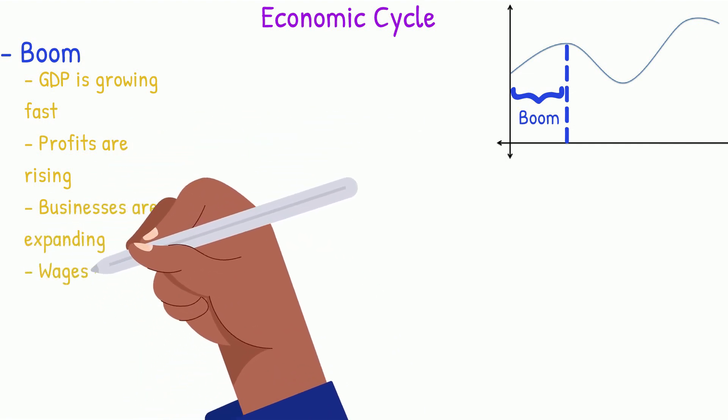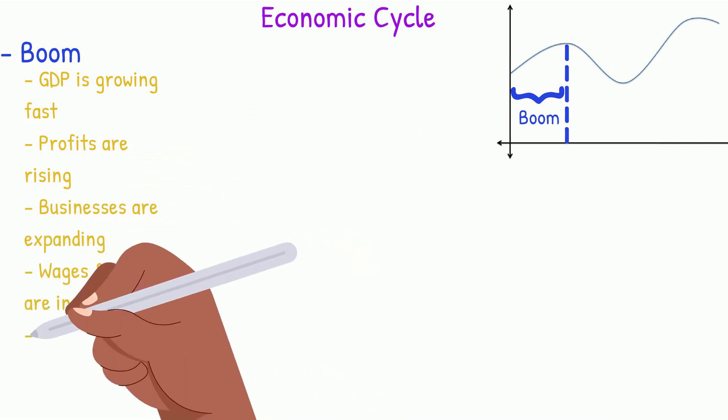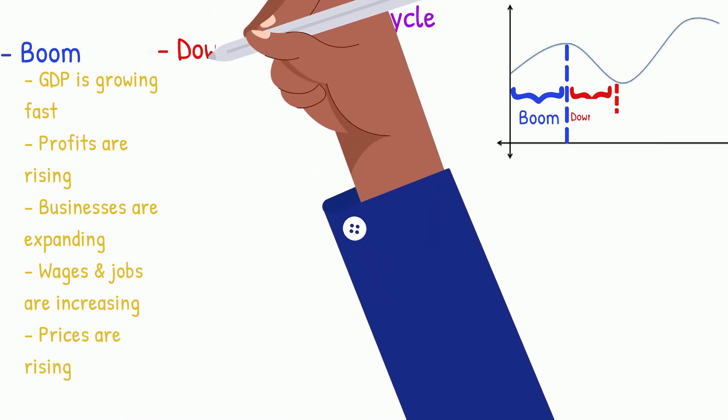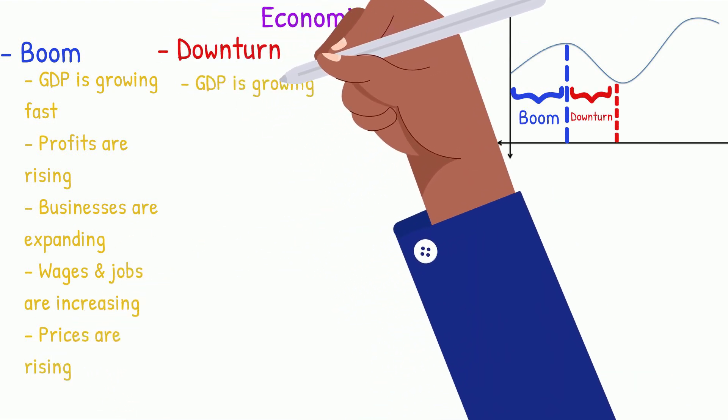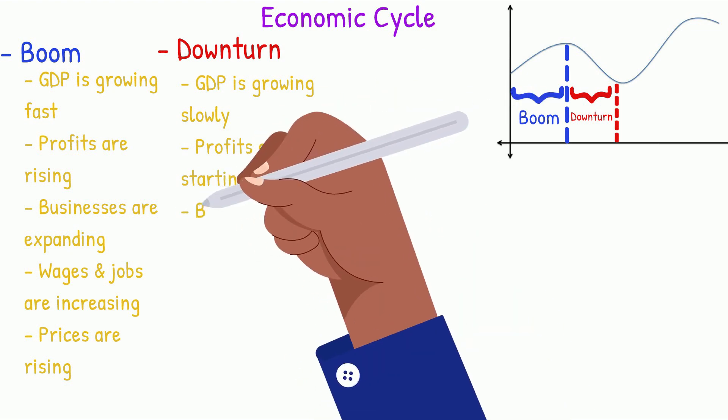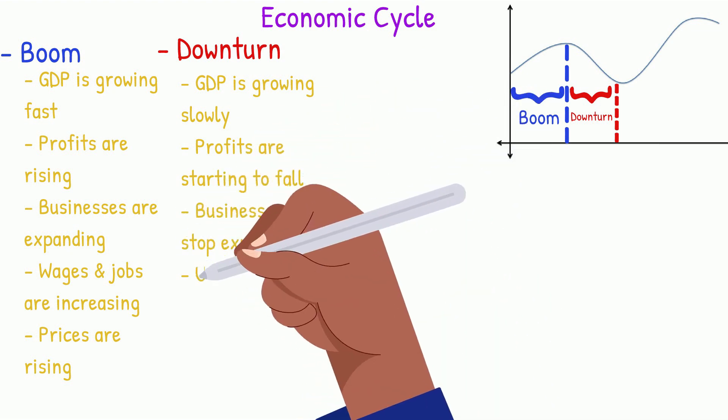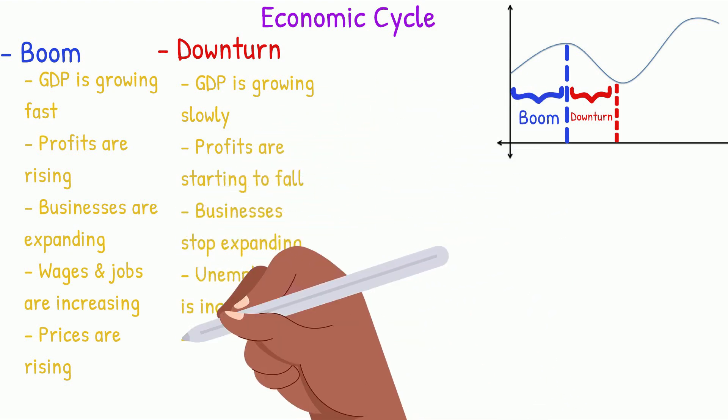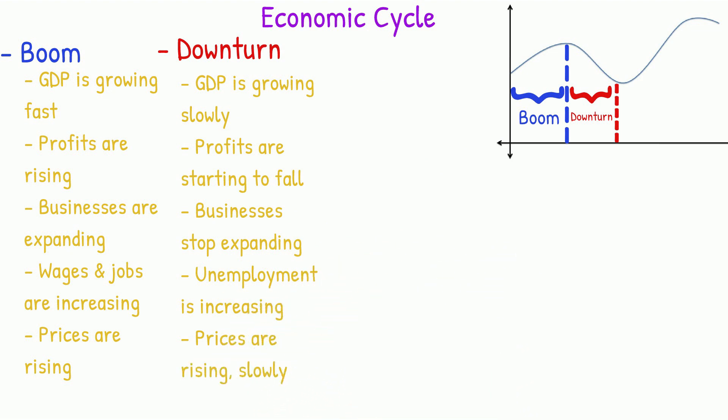The downturn is when GDP is still growing but at a slower rate. Profits fall, businesses stop expanding, demand starts to fall, unemployment increases and prices rise at a slower rate.